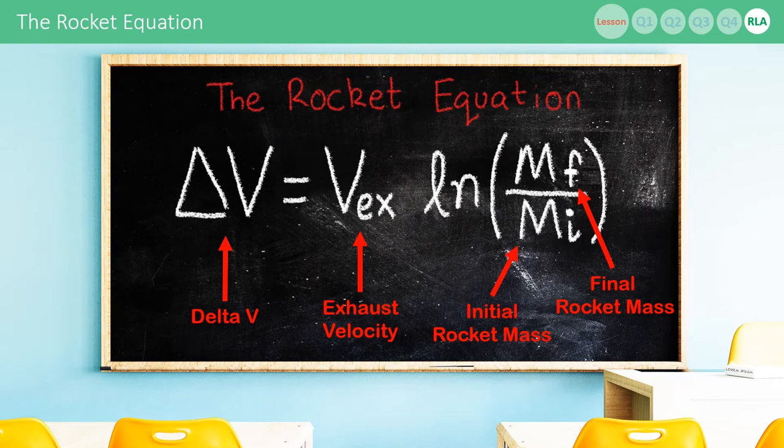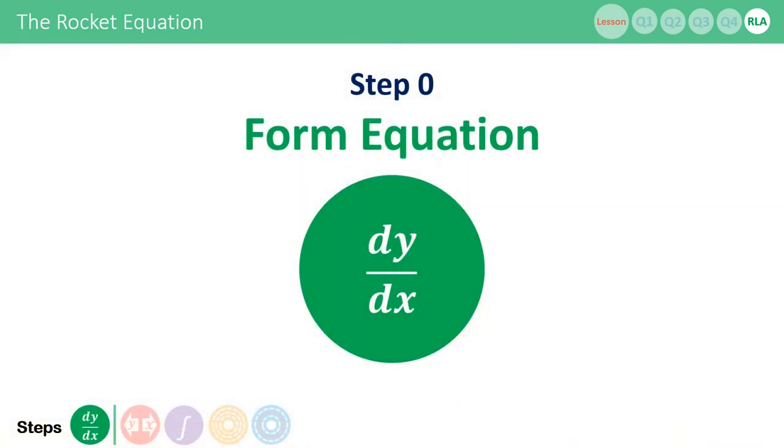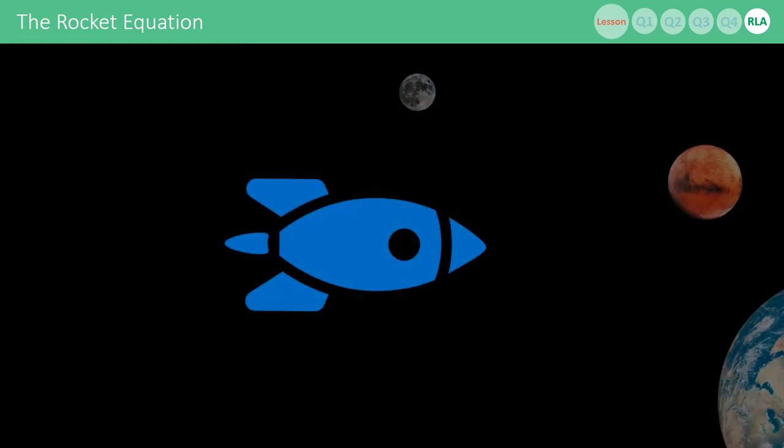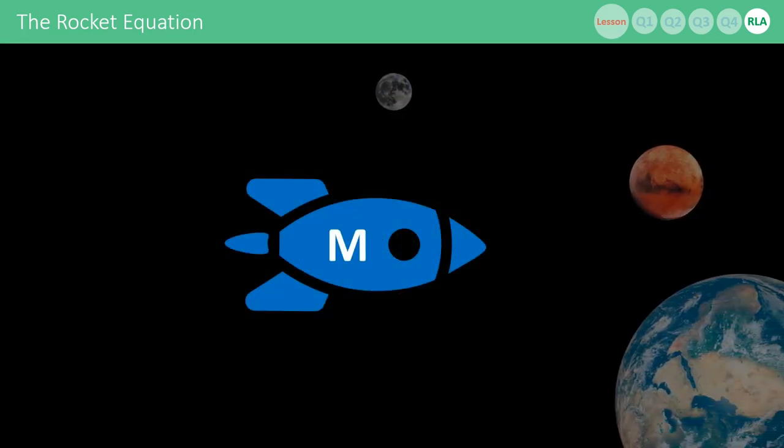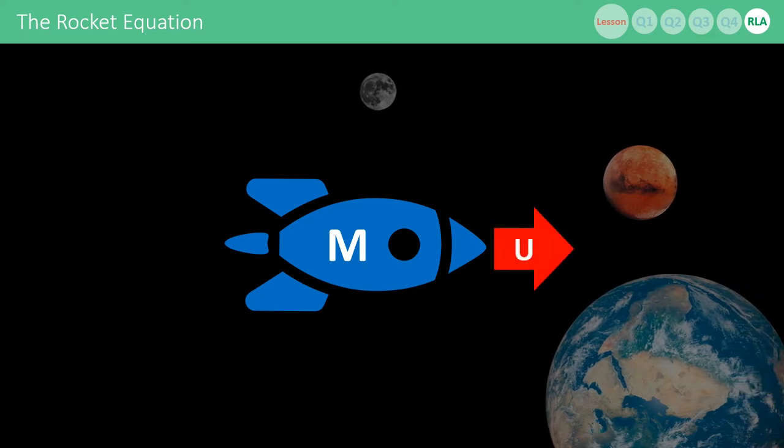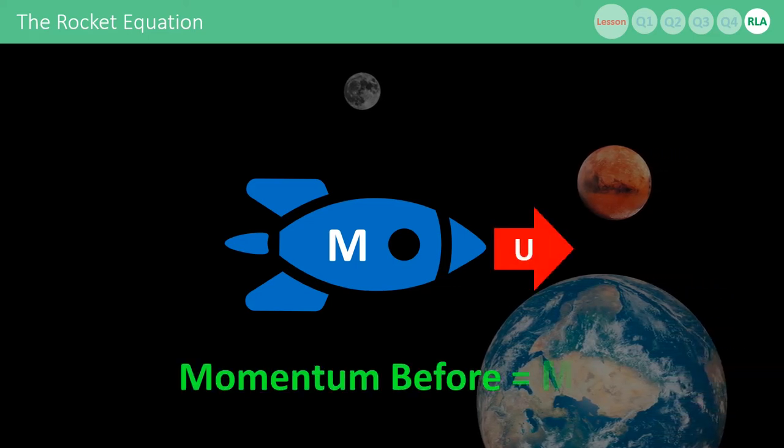How do we come up with this equation? Well, it's through solving a differential equation. First, we form our differential equation. Imagine a rocket moving through space, with mass m and velocity u. Its total momentum is simply its mass times its velocity.